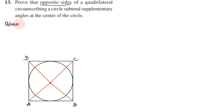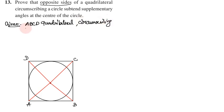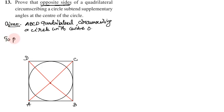Given: ABCD is a quadrilateral circumscribing a circle with center O. To prove: opposite sides subtend supplementary angles. We need to show angle AOB plus angle COD equals 180 degrees, and angle AOD plus angle BOC equals 180 degrees.